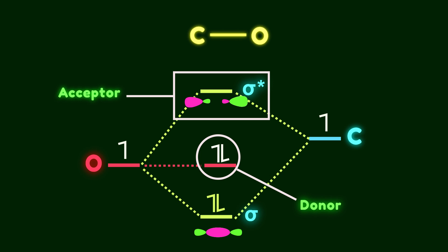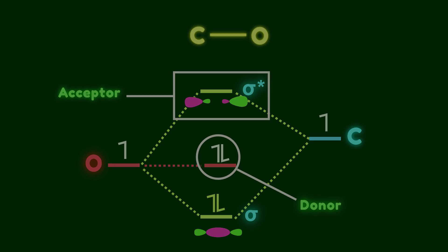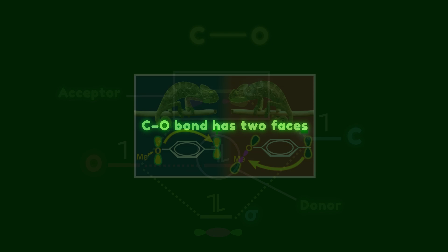Because of this dual behavior, we say that the carbon-oxygen bond has two faces. It can change its role depending on the environment, almost like a chameleon. I've also created another video where I explain this chameleonic behavior of the carbon-oxygen bond in more detail — check it out if you are interested.